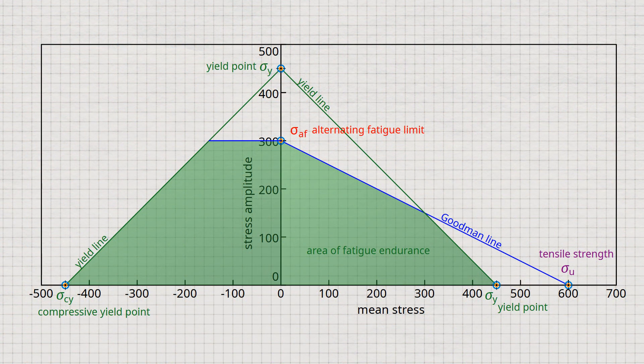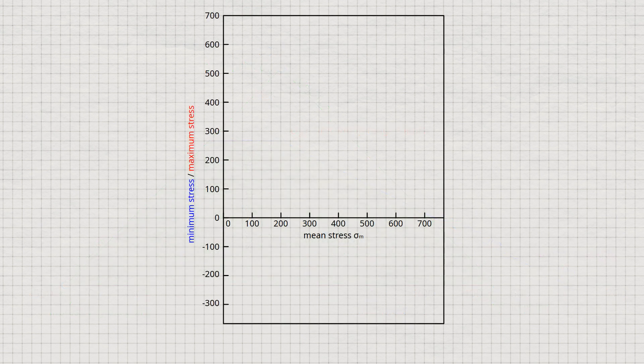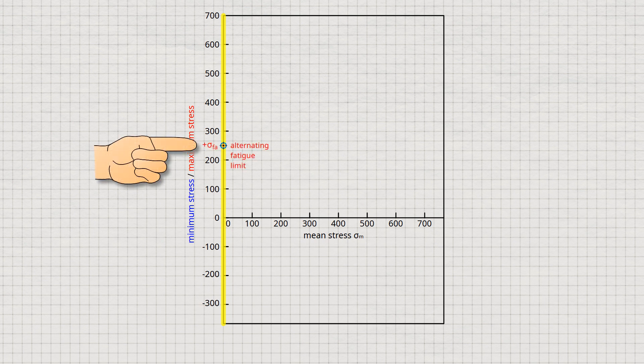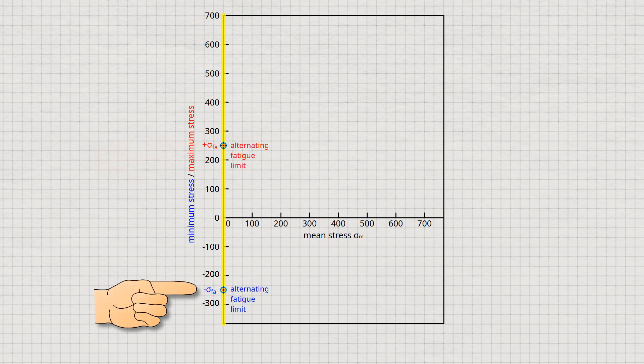Besides the Hay diagram, the fatigue limit can also be illustrated in a diagram developed by Smith. In such a Smith diagram, the minimum stress sigma_min and the maximum stress sigma_max are plotted against the mean stress sigma_m. Based on fundamental considerations, there are again certain fixed points defined in advance. For a pure alternating load with a mean stress of zero, the fatigue limit obtained is the alternating fatigue limit sigma_AF. In this case, the value of the maximum stress is plus sigma_AF and the minimum stress is minus sigma_AF.